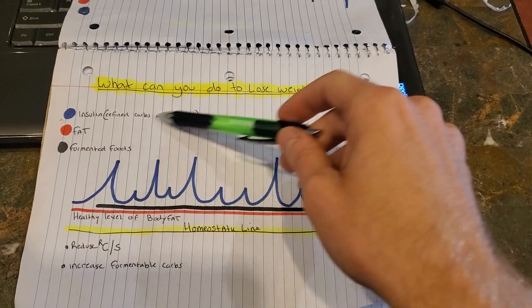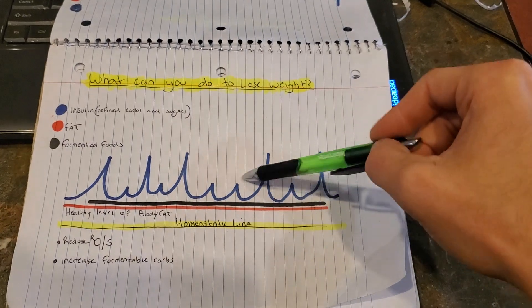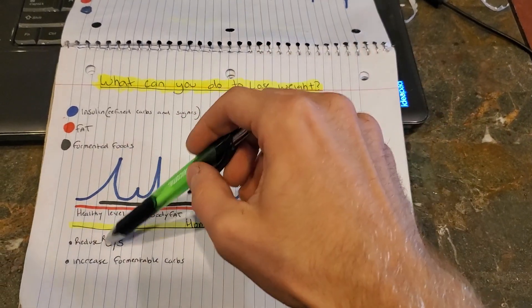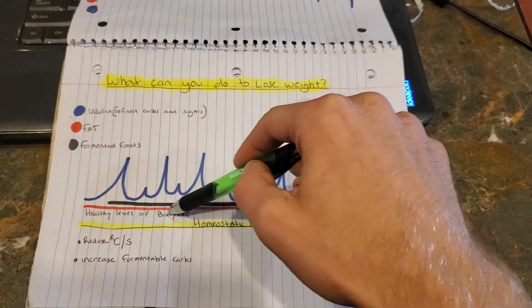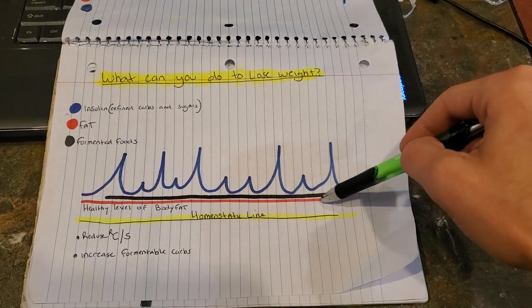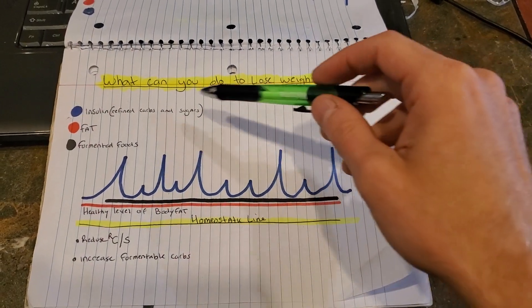When it comes to losing weight, same thing here. Your insulin, you keep spiking this, you're messing yourself up. Here's your fat stores. Your healthy level of body fat, you need body fat to stay alive. There's percentage levels I'll link as well.